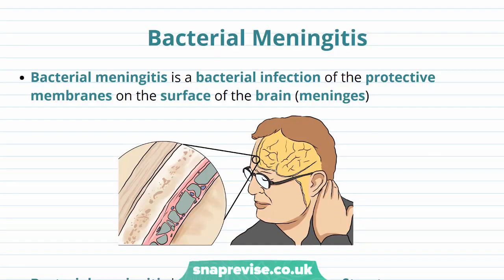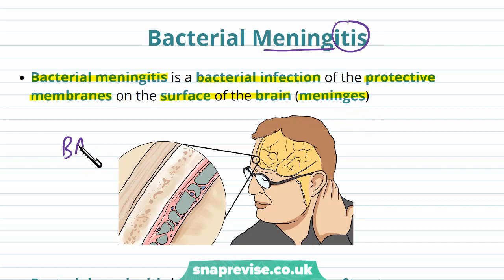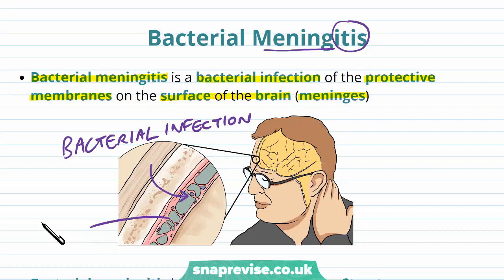Bacterial meningitis is a very serious disease. Meningitis comes in different forms — you can also have viral meningitis — but here we're talking about the form caused by bacteria. Bacterial meningitis is a bacterial infection of the protective membranes which lie on the surface of the brain. These protective layerings are known as the meninges, and there are three different layers. That's why it's called meningitis — 'itis' refers to inflammation — so essentially we have a bacterial infection which reaches these protective layers, causing them to become inflamed.